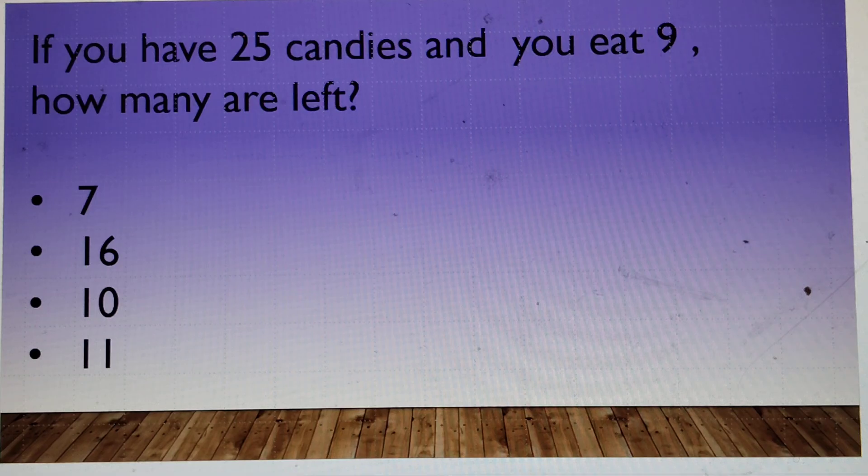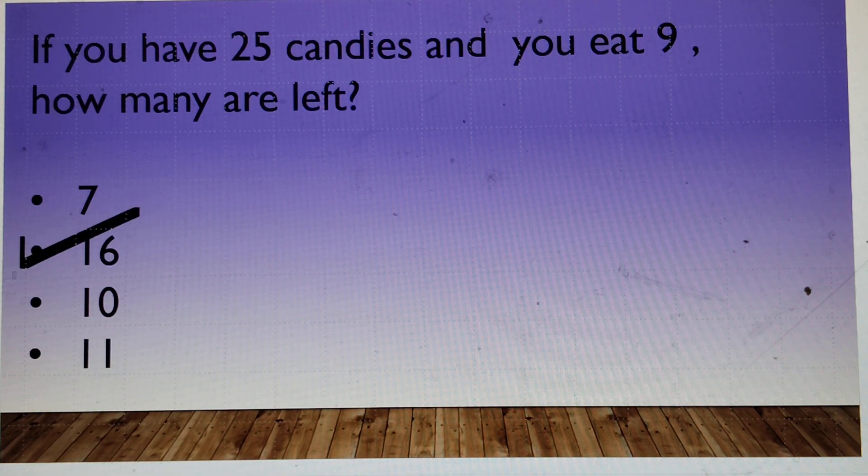If you have 25 candies and you eat 9 out of them, how many are you left with? 7, 16, 10 or 11? 16. 16 is the right answer.